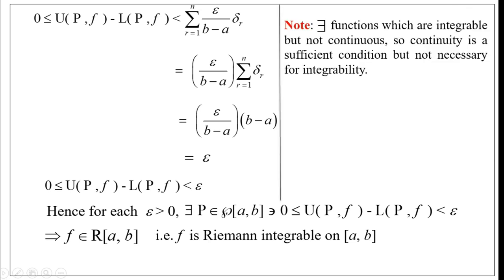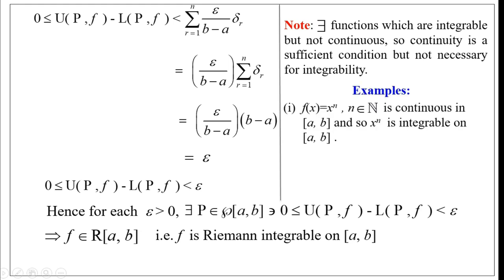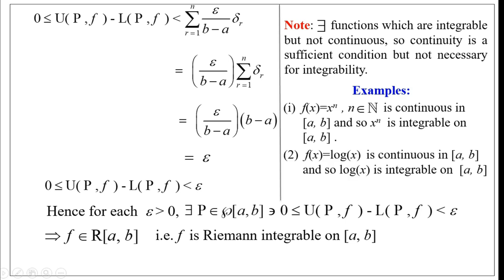Note: There exist functions which are integrable but not continuous. So continuity is a sufficient condition but not necessary for integrability. Examples: f(x) = xⁿ (a polynomial, n ∈ ℕ) is continuous and hence integrable on [a, b]; f(x) = log x is continuous on [a, b] and so is also integrable on [a, b].